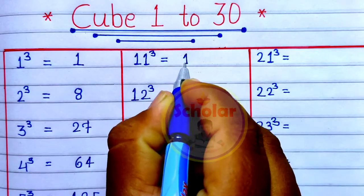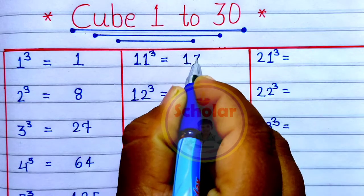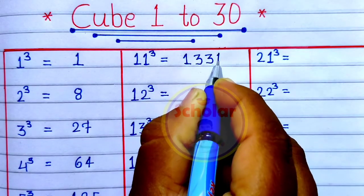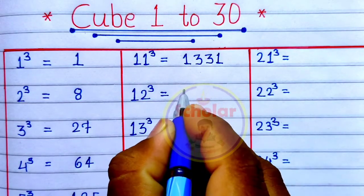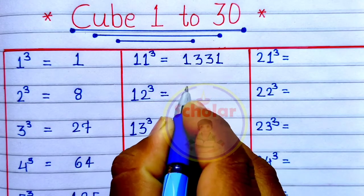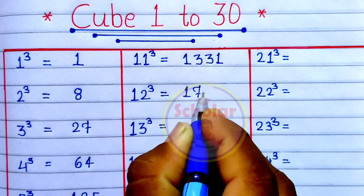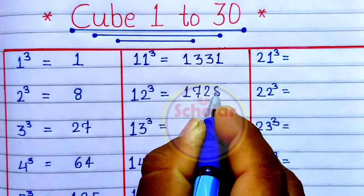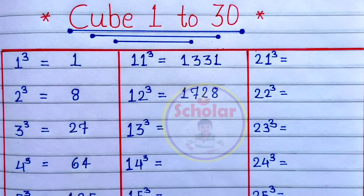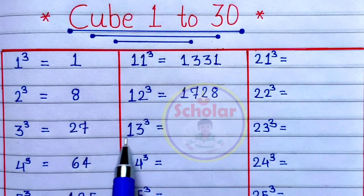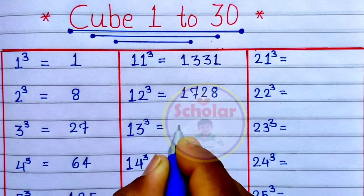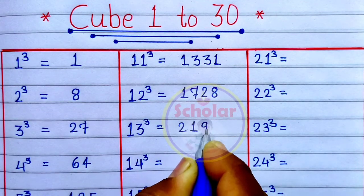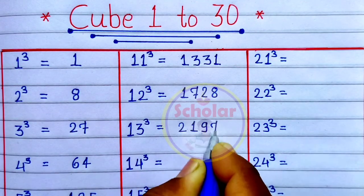Cube of 11 is 1331. Cube of 12 is 1728. Cube of 13 is 2197.